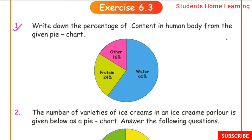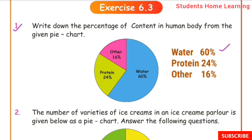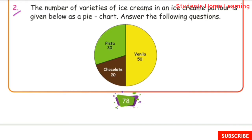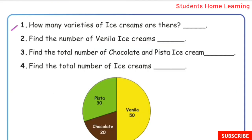Human body content is given as a pie chart. One ice cream parlor's data is given as a pie chart. Answer the following questions. First one: how many varieties of ice creams are there? There are three varieties — Pista, Chocolate, and Vanilla. Answer: 3.